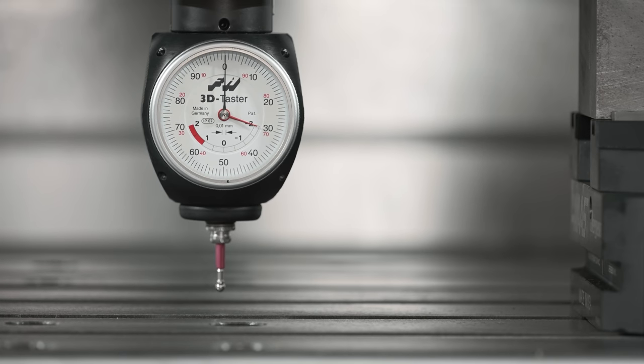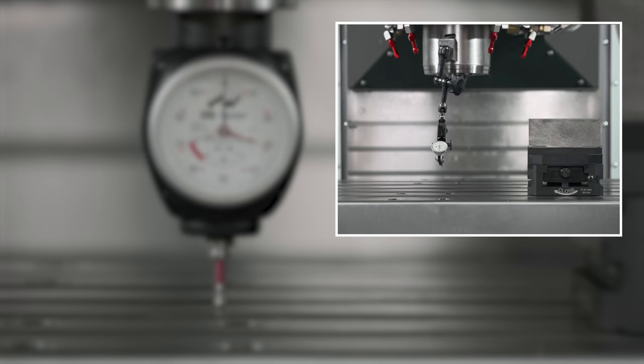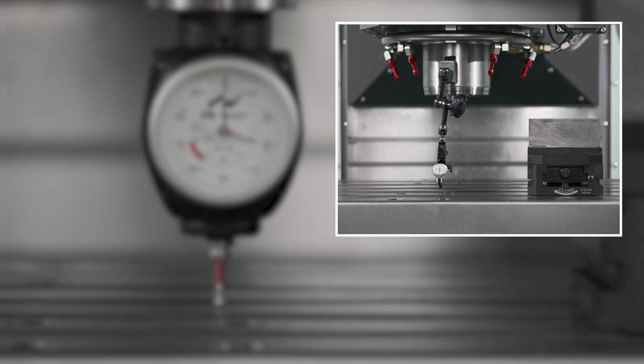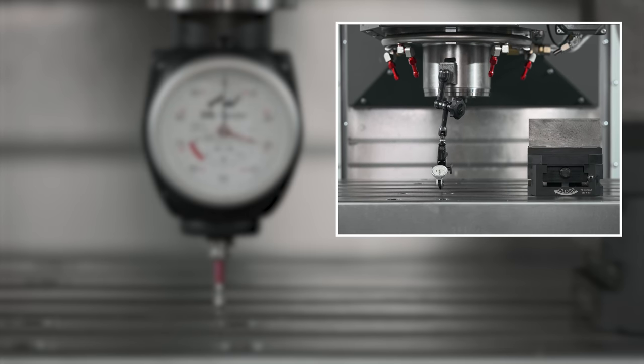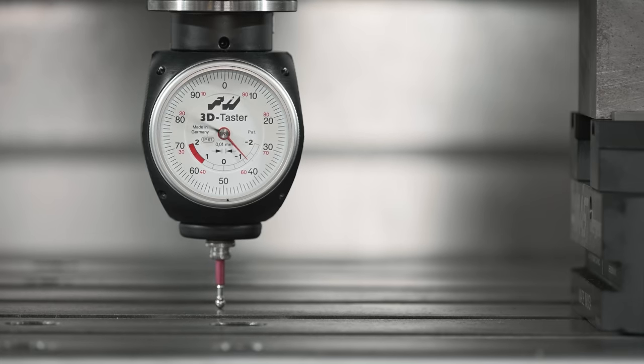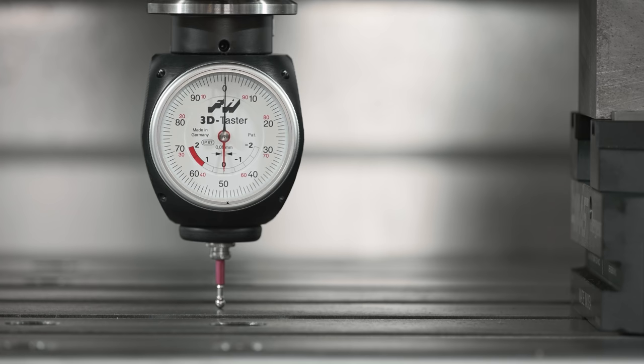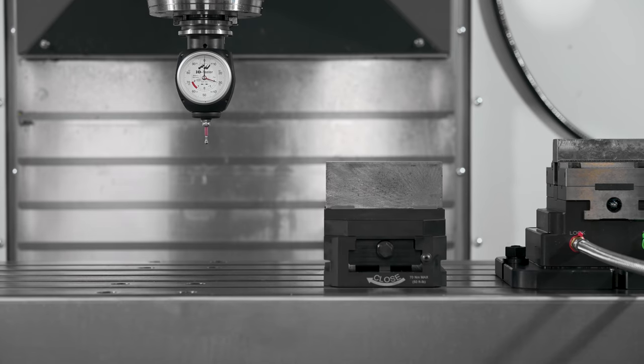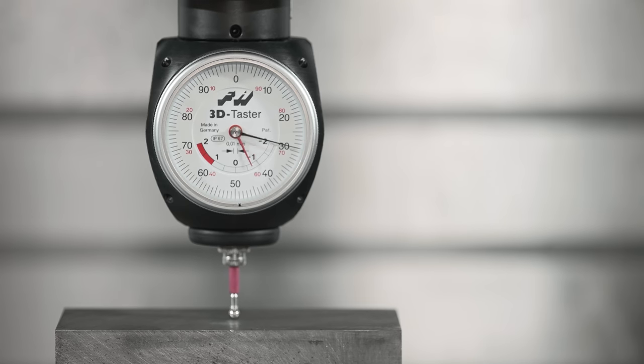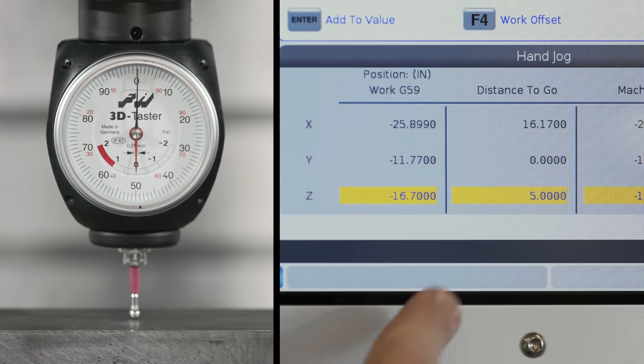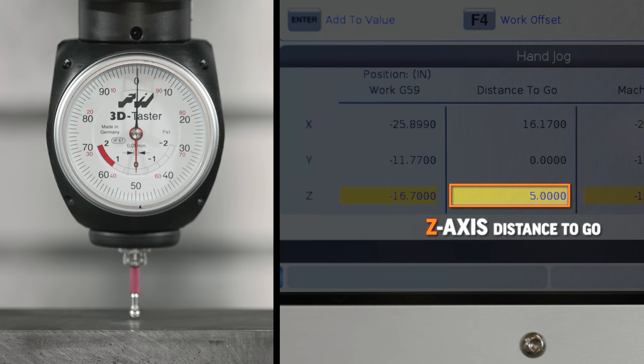I'm using a Haimer indicator in this case, but a regular test indicator held in a mag base will work the same way. We will zero our indicator on our table and then jog up and over to the top of our part until our indicator once again reads zero. We can view our measured distance on our position screen as our Z distance to go value.